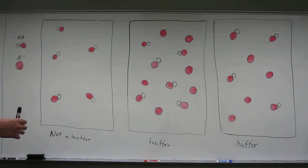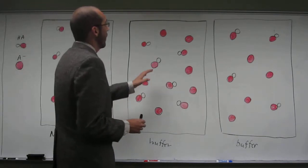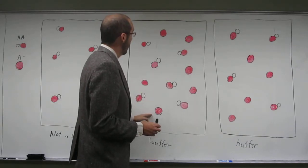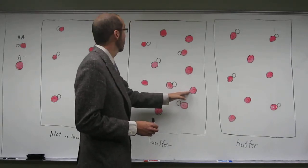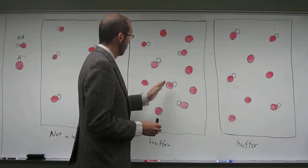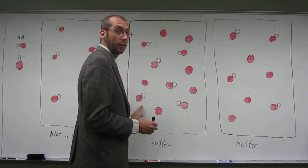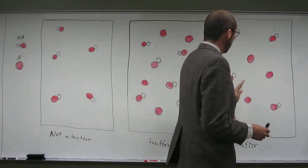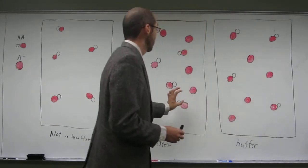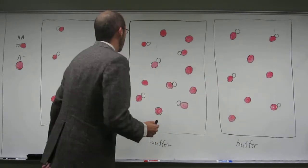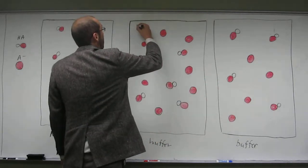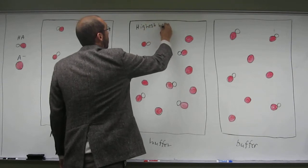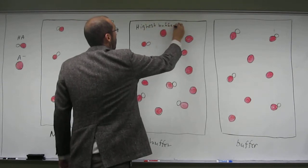The one in the middle. The one in the middle, right? Why? Because if we count, one, two, three, four, five, six HA's. So six and six. And here we have one, two, three, four, one, two, three, four. So this one's more concentrated than this one. So this has the highest buffer capacity.